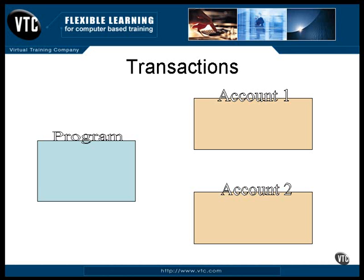You can bring the system back up, but the money just isn't anywhere. Doing it in a different order can be just as bad. Before you remove the money from one account, you simply add it to the other. But before you can remove it from the first account, the system goes down. When you bring the system up again, you have twice as much money recorded as you had originally.